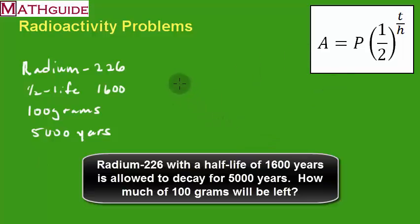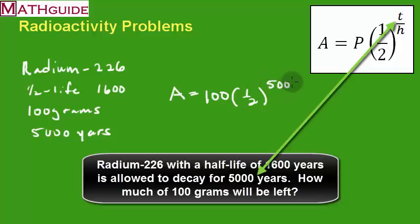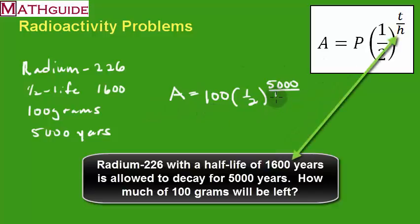We're going to use the formula. So we're going to plug in numbers into the formula. It turns out that we have 100 grams, that's our P. We're always going to use half because we have a half-life. It loses substance over time. Our time is 5,000 years, and we're going to put this all over H, and we know that the half-life is 1,600 years.